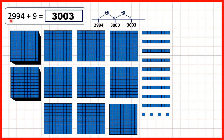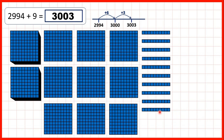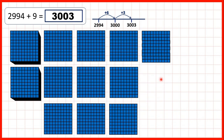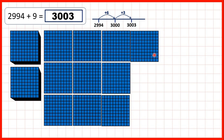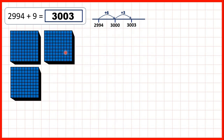Then we had 2,994 plus 9. We can add 1, 2, 3, 4, 5, 6, exchange, exchange again. And now, because we've got 10 hundreds, we can exchange again — exchange those for 1,000. Then we just have 3 more ones to add to give us 3,003.